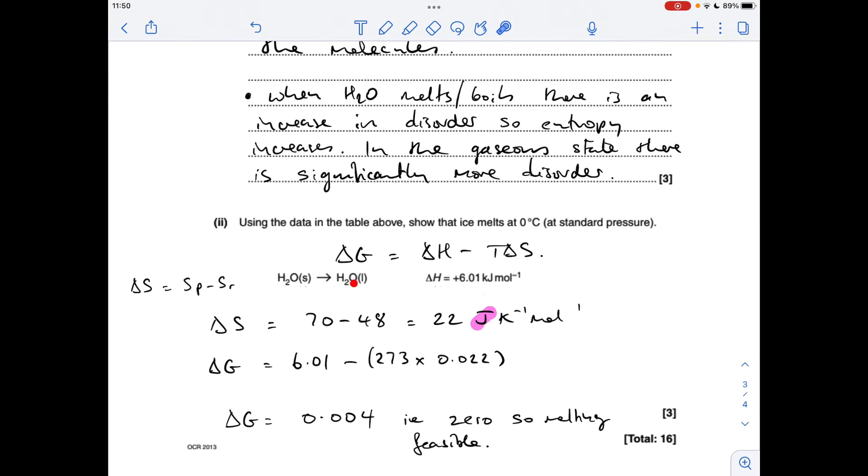So there's the process that's taking place when ice melts. We've got the ΔH value. Notice it's saying kilojoules per mole. We've got to calculate the ΔS value, the entropy change for that process. So that's the entropy of the product minus the entropy of the reactant. So we get that. It's 22 joules per Kelvin per mole. So you've got to be careful with your units.